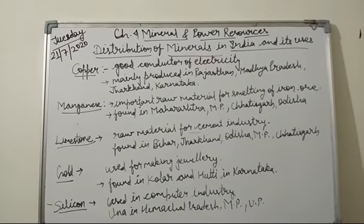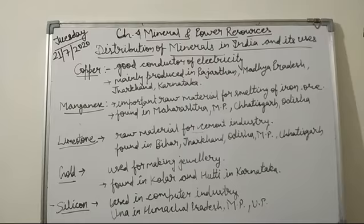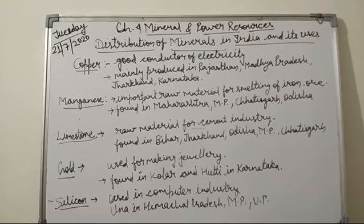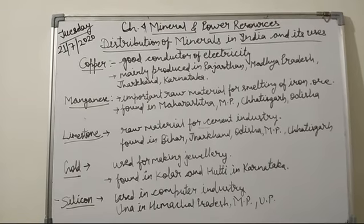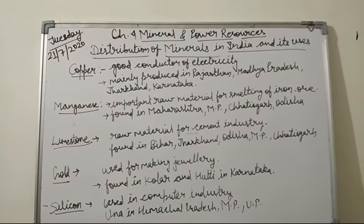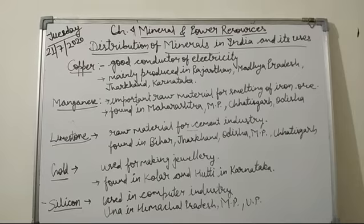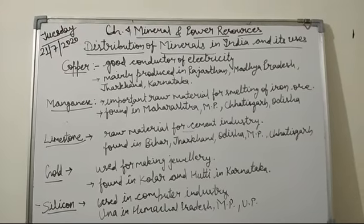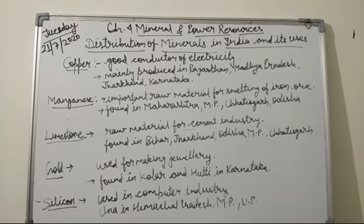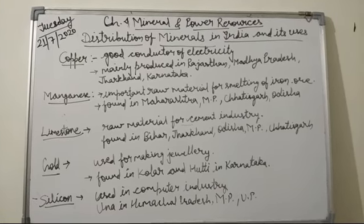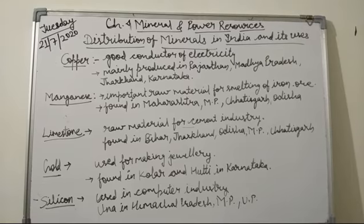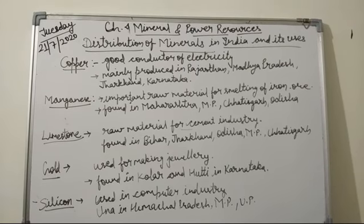The next mineral is copper. As you have learned in science, copper is a good conductor of electricity and it is an indispensable metal in the electrical industry. It is used for making wires, electric motors, transformers and generators. Copper was also used for making coins in older times. It is mainly produced in Rajasthan, Madhya Pradesh, Jharkhand and Karnataka.